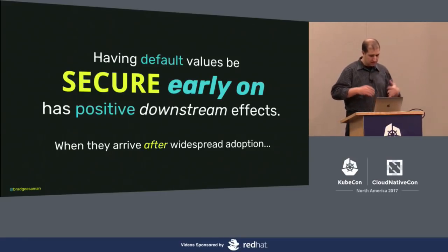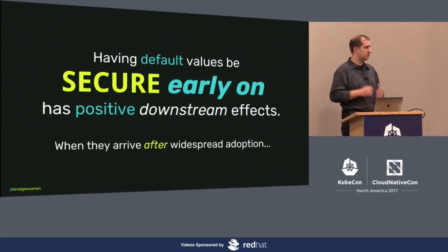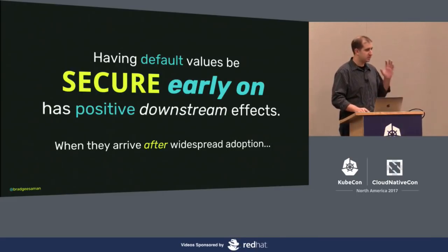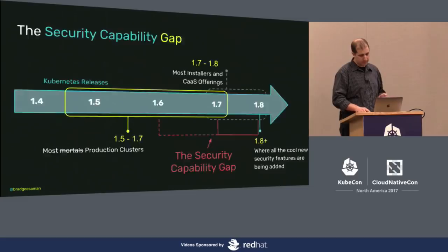My belief is that having default values be secure early on — in terms of a project or how you're distributing in source code — has positive downstream effects to the community. And when something like Kubernetes literally blows up and has widespread adoption, that inertia is big and it's real.